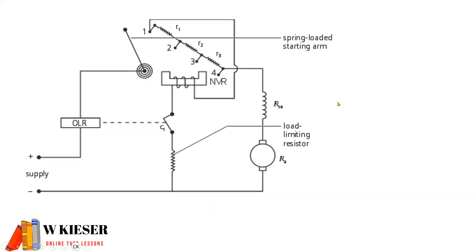In this example, we have a faceplate starter connected to a series motor. You can see the field winding is in series with the armature. We have the no-volt relay, which shuts the motor down when there's a loss in voltage, and the overload relay to detect overcurrent. We have the position arm, and when the position arm moves to stud one, we include all the resistors, until the motor reaches full operating speed and the position arm moves back to the off position.